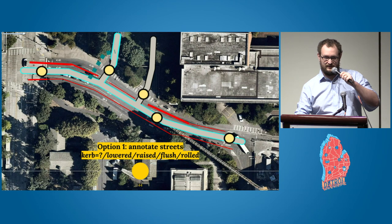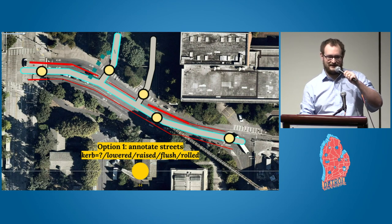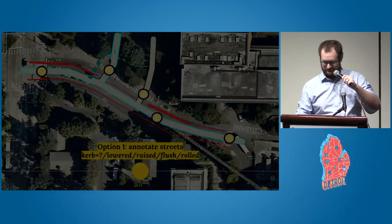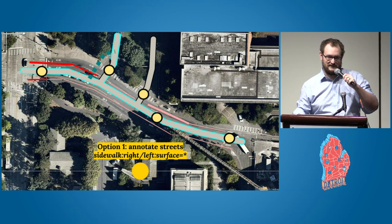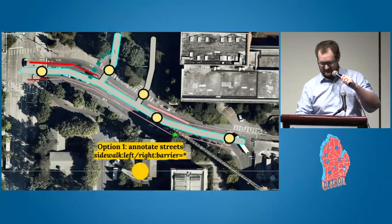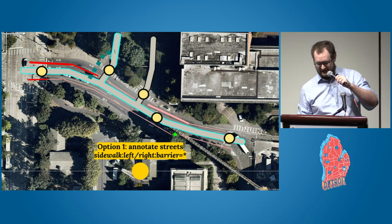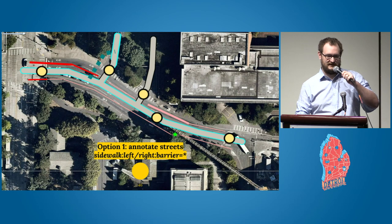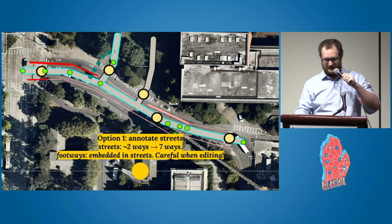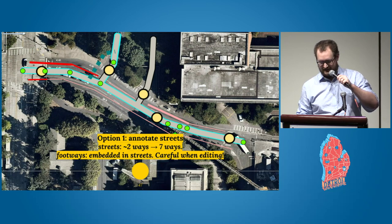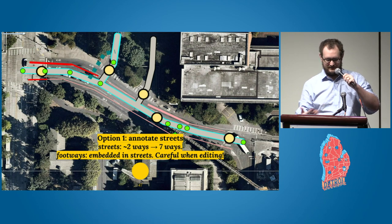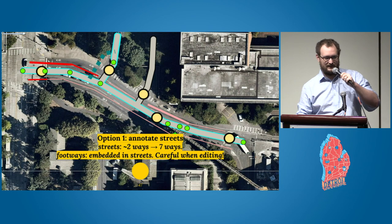If you want to add barriers — such as a sidewalk that gets very narrow with a tree causing major wheelchair obstruction — that goes on the street line with a specifier for which side. Summarizing: we started with a street that had two ways, and now we have at least seven ways with the street split quite a lot — repeated over and over across an entire city. All the footway information is embedded in the street, requiring care when editing: if you even reverse one segment, your pedestrian network is broken.